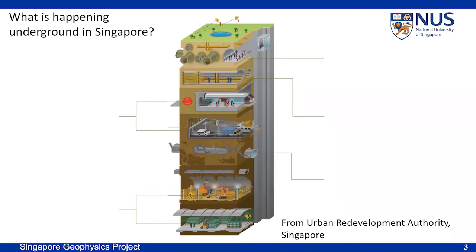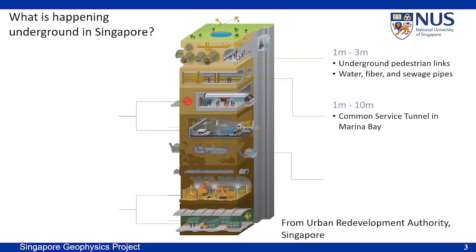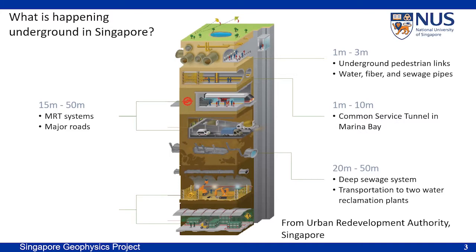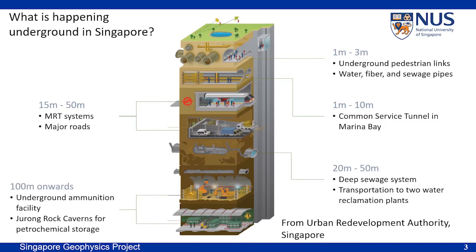Due to this lack of space above ground, making better use of underground space is more essential for a metro city like Singapore. So what is happening underground in Singapore? In the shallower part, we have different kinds of pipes and tunnels for both water and fibers. From 15 to 50 meters, we have the MRT system and major roads. And for the deeper area, we have deep sewer systems and underground storage facilities.